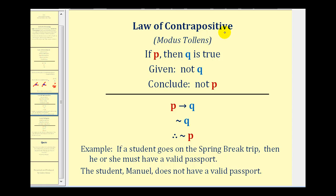The law of contrapositive, or modus tollens, says that if P then Q is true, and given not Q, we can conclude not P. Using notation: if P then Q is true, not Q, therefore not P. This is a valid form of deductive reasoning.